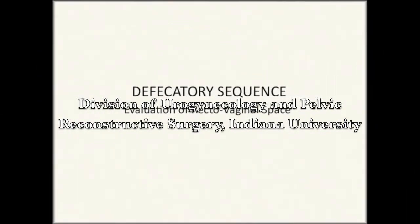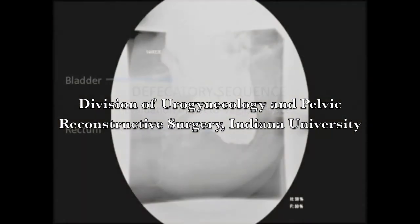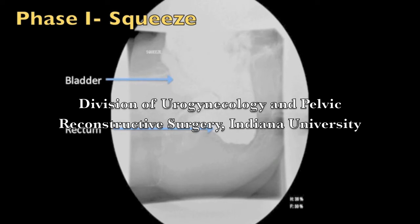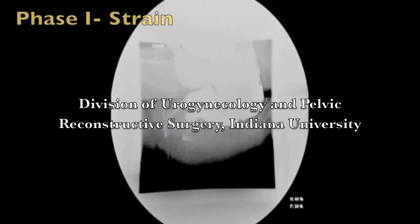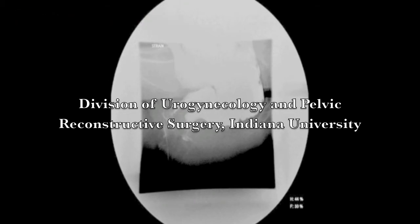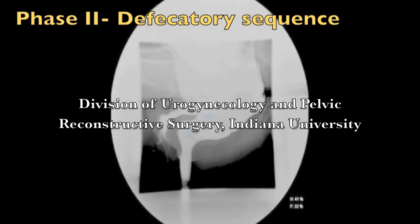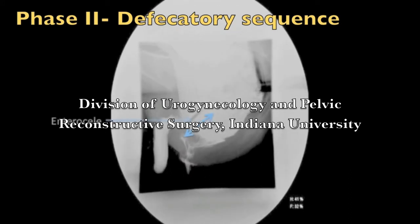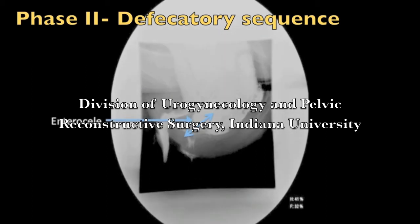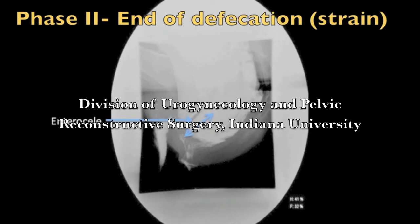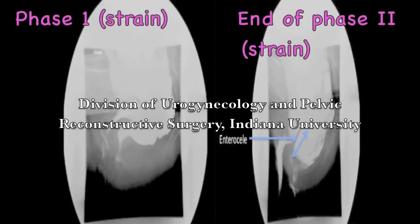Prolapse into the rectovaginal space is often underdiagnosed during physical exam. This is a patient with a chronic history of pelvic pressure and rectal fullness whose DCP was obtained because physical exam was not compatible with her complaints. When asked to bear down, no significant prolapse is seen, and the rectum filled with contrast gives the rectovaginal space a normal appearance. The defecatory sequence, however, shows a large enterocele filling up the rectovaginal space, causing contrast to be expelled from the vagina. Note the widening of the rectovaginal space caused by the enterocele. This demonstrates that the dynamic sequence is superior to static images in evaluating prolapse.